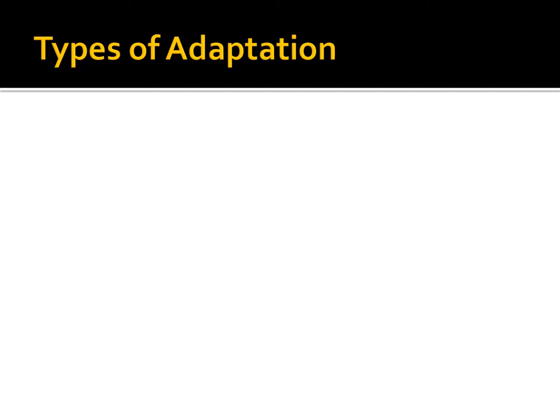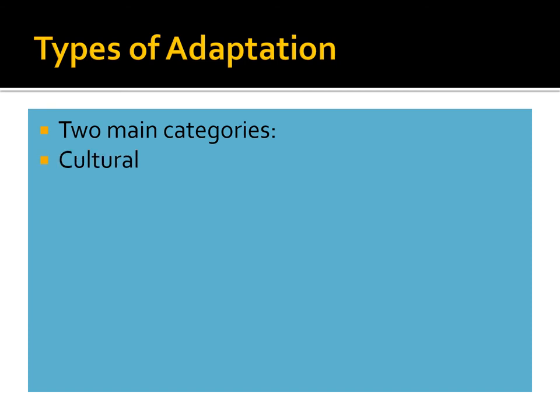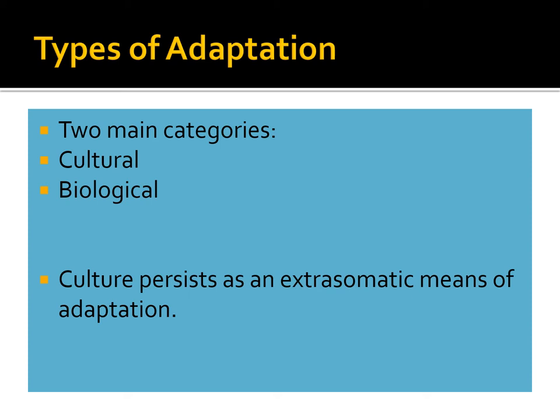There are two main categories of adaptations: cultural adaptations — things like housing and clothing and cultural practices that allow better adaptation to the environment — and biological adaptations. Culture persists in our species as an extrasomatic means of adaptation. It is our way of adapting to the environment without having to go through the long and arduous process of genetic change, because making substantial evolutionary change takes many, many generations. We really need this cultural mechanism in order to make rapid changes to the rapidly changing environment.